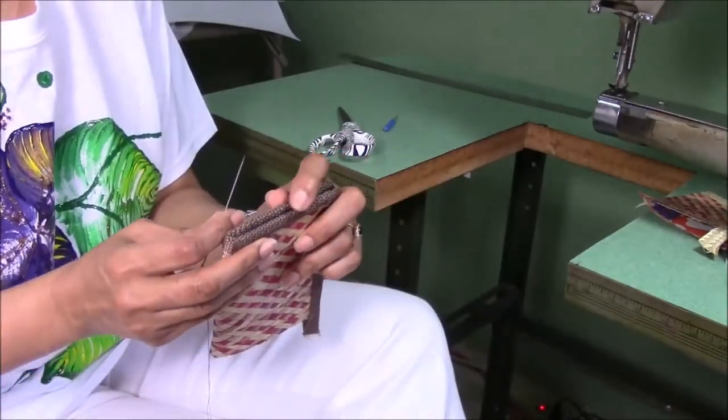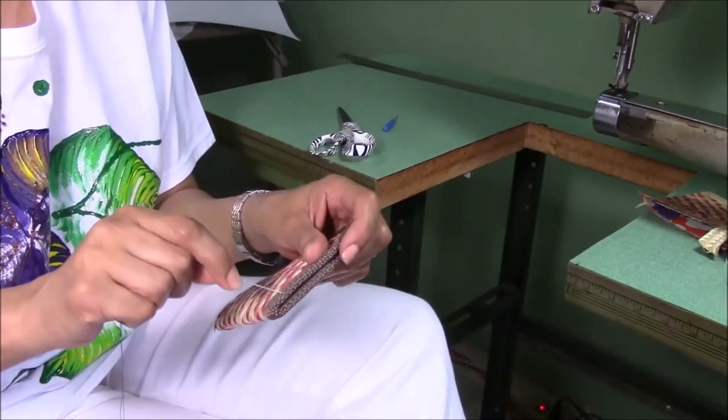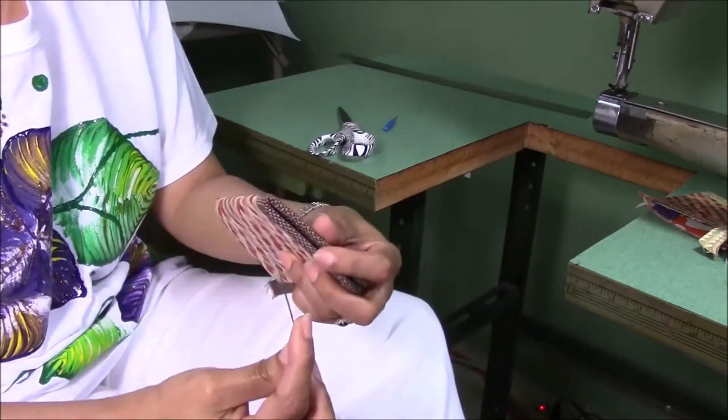We're going to stitch our webbing together and not try to penetrate the straw or the other materials. Now you might get a little piece of it, but that's not our goal.